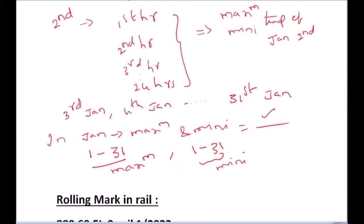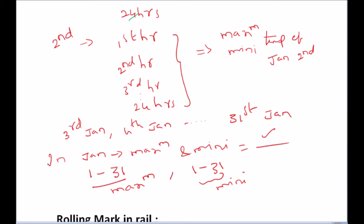Similarly, we also record the maximum and minimum temperature on January 2nd — recording every hour up to 24 hours and noting the maximum and minimum among those. Like this, we get the maximum and minimum temperature for January 3rd, 4th, 5th, and so on up to January 31st. So now we have 31 days of maximum and minimum temperature for the month of January.